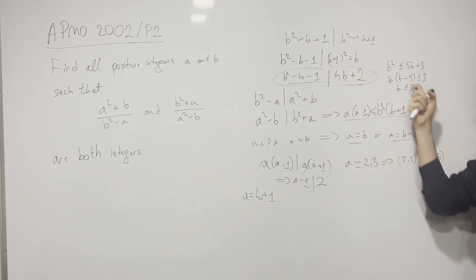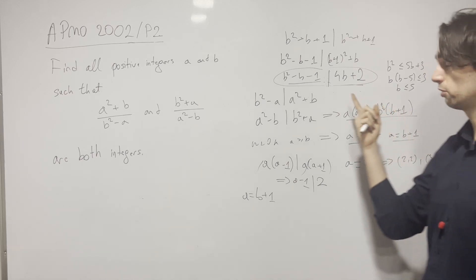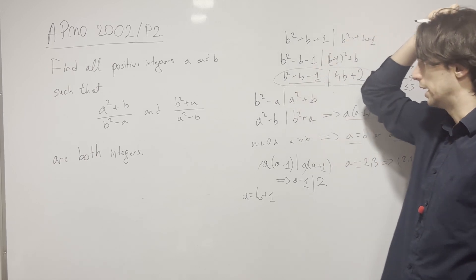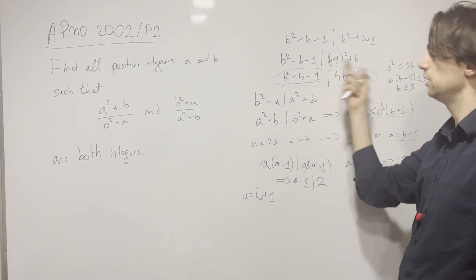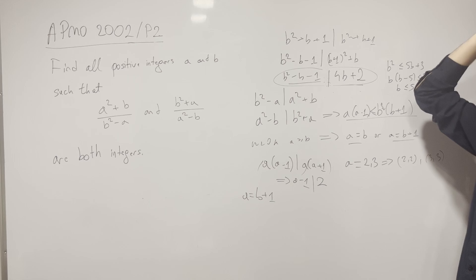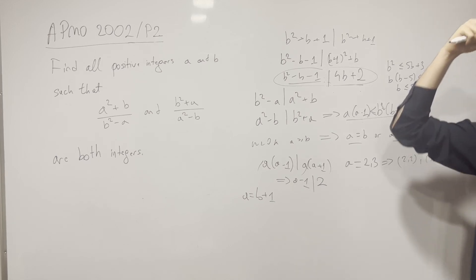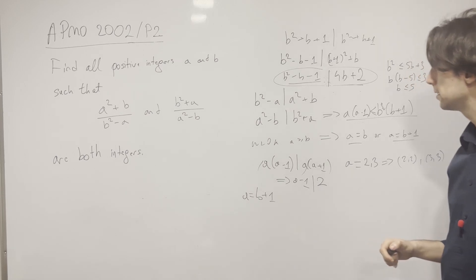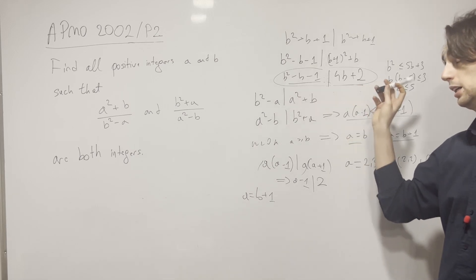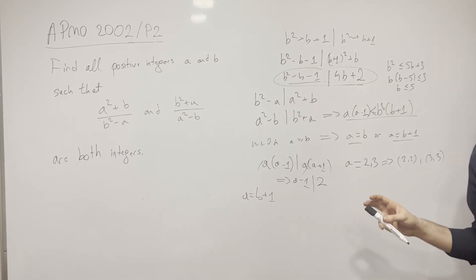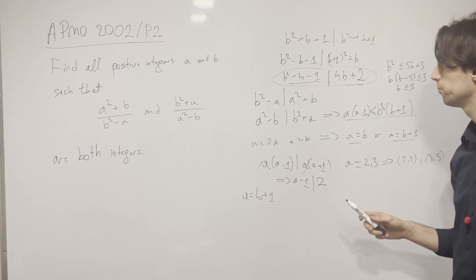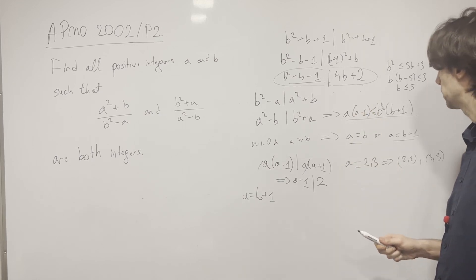Check if there's actually a divisibility here. For 5, we have 22 here and 19. For 5, it doesn't work. For 4, we have 4 times 3. I'm looking at b(b - 1). 4 times 3 is 12, minus 1 is 11. Here we have 18, 14. It doesn't work. For 3, we have 3 times 2, which is 6, minus 1 is 5. Here we have 14. So 3 doesn't work either.